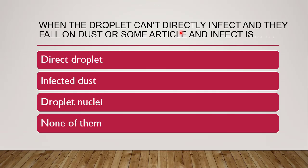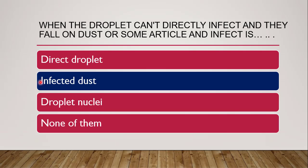Next question: when a droplet can't directly infect and it falls on dust or some article and then causes infection, that droplet type is — whether it is direct droplet, infected dust, droplet nuclei, or none of them. The correct answer is infected dust. When the droplet falls on dust or some article, it is called infected dust.